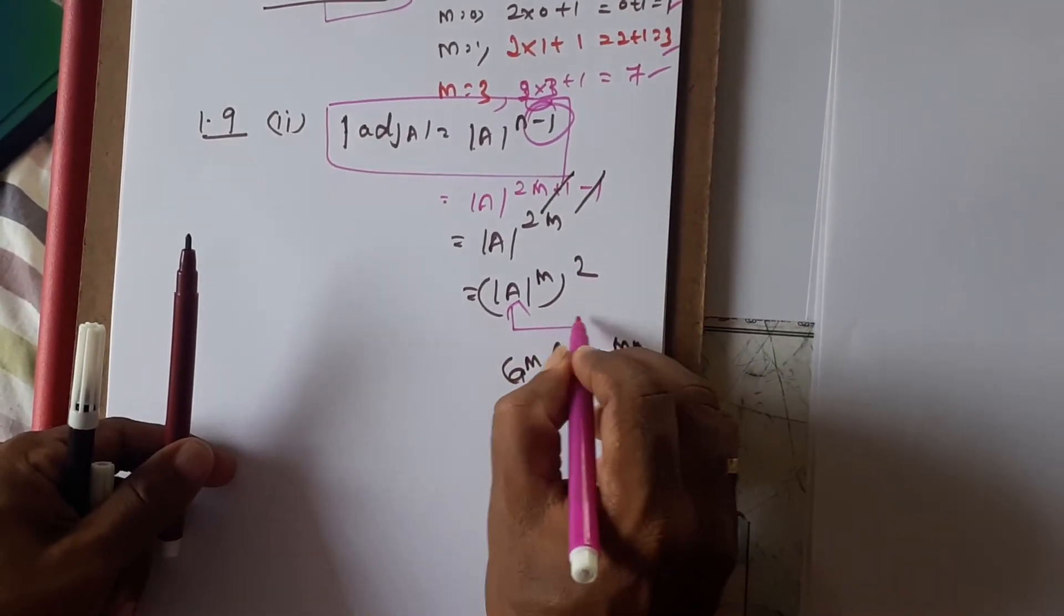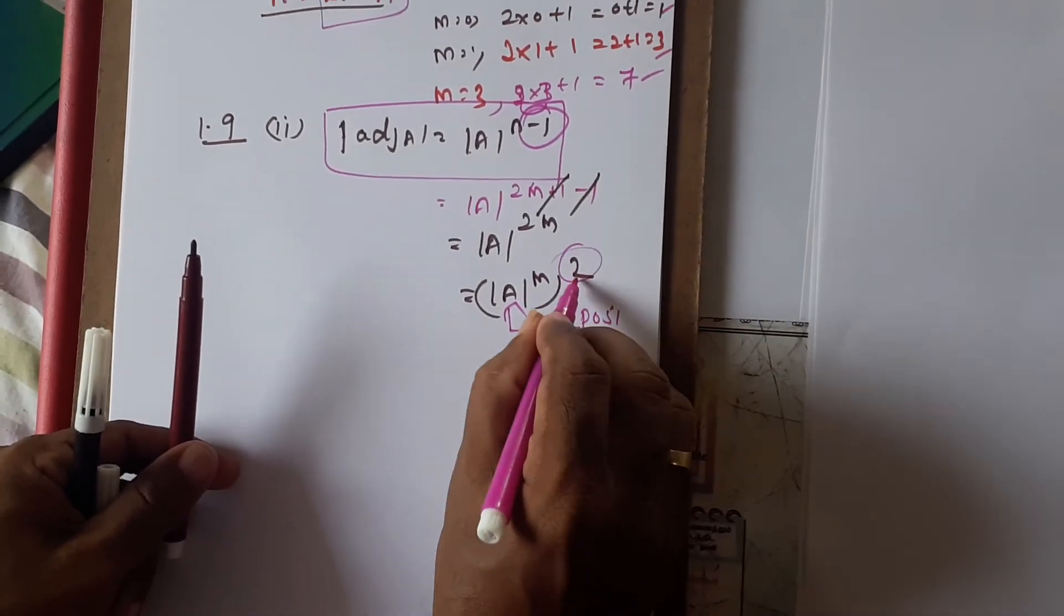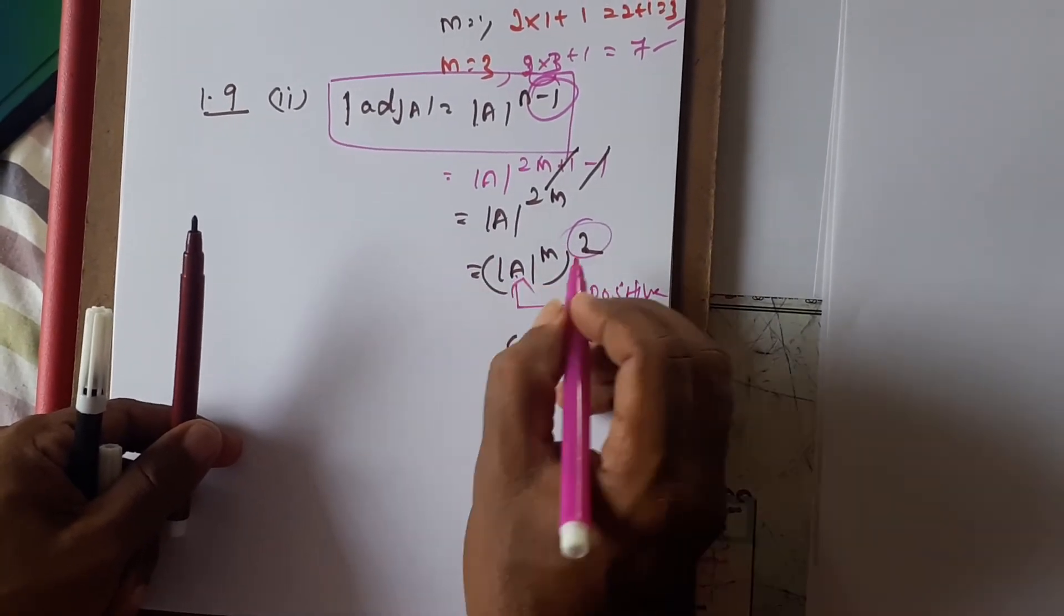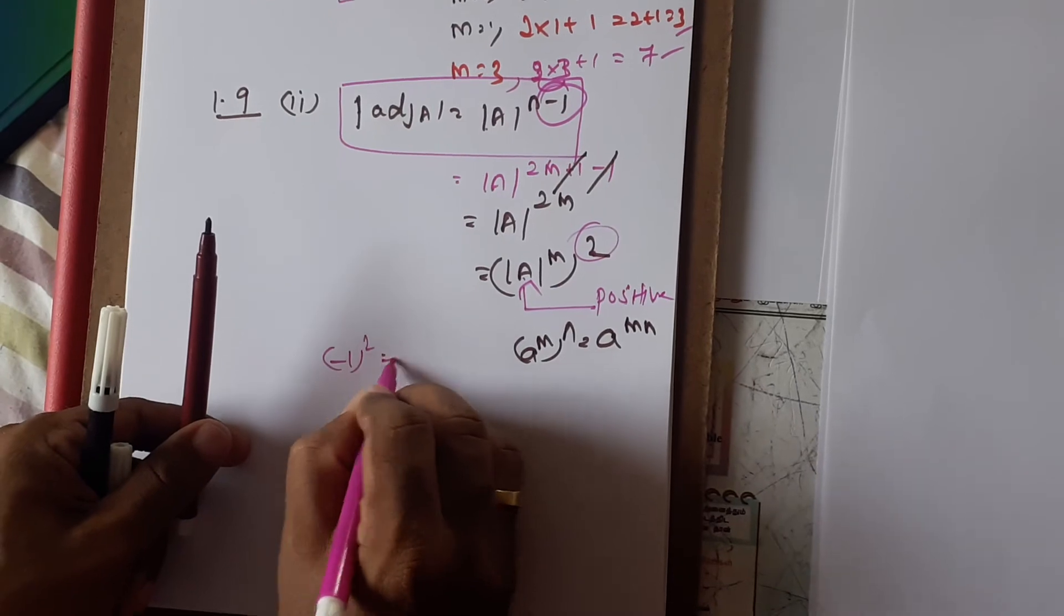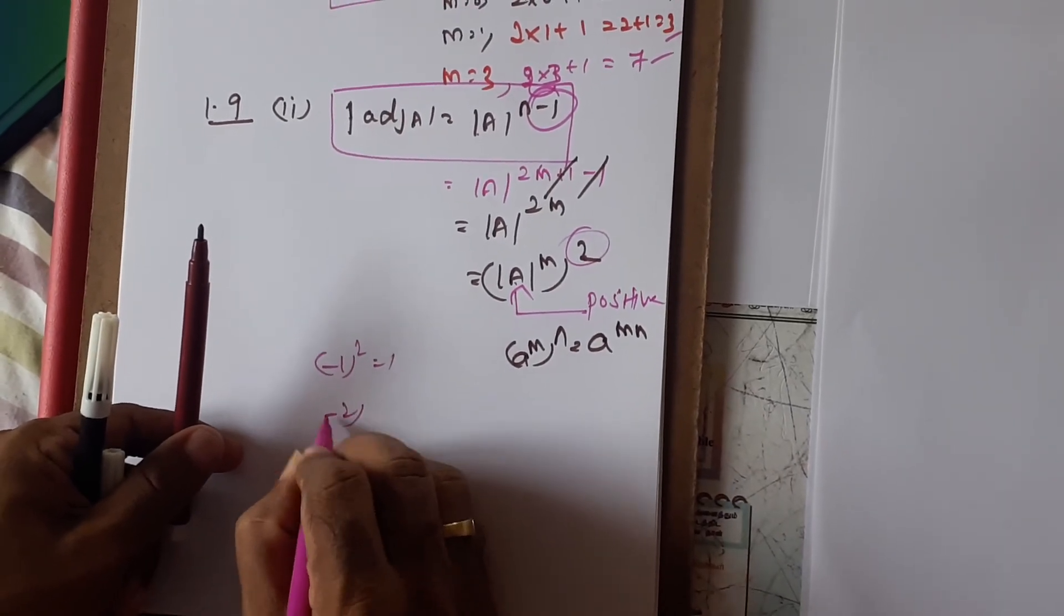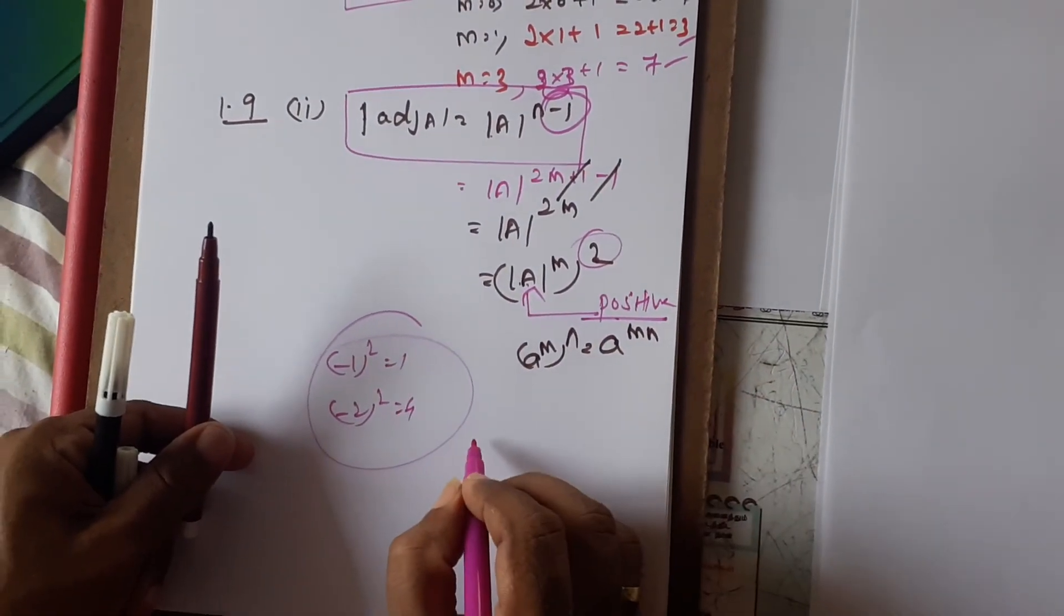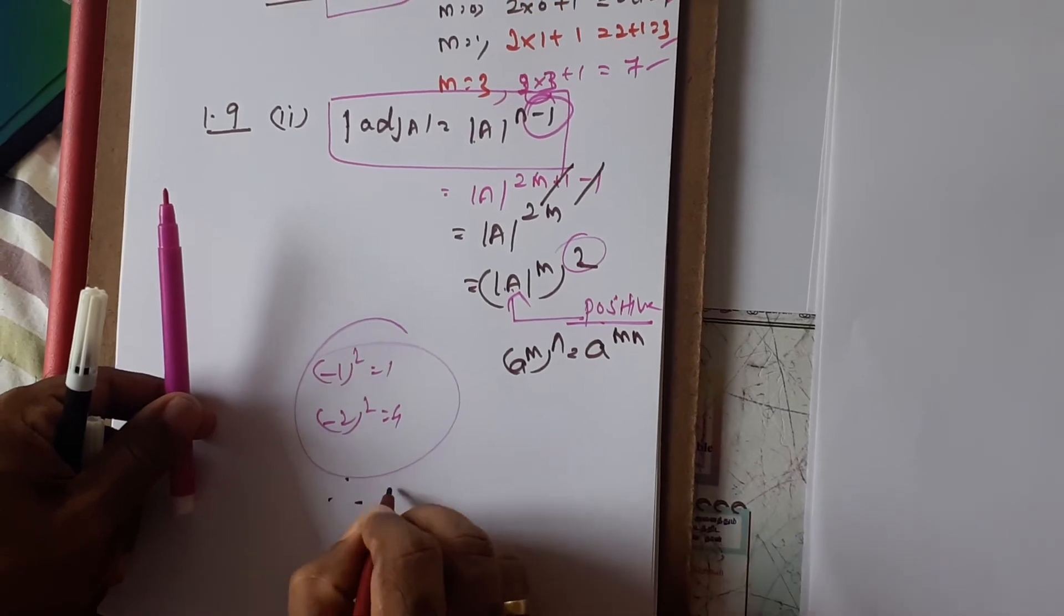The whole square means determinant A will be positive, because the square value will be there. If you take any value, minus 1 the whole square is positive 1, minus 2 the whole square is positive 4. So determinant of A is a positive value.